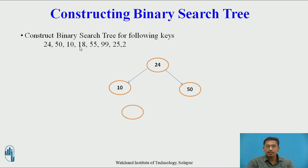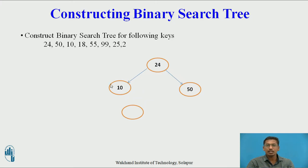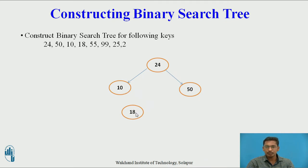Next node is 18. We traverse from root: 18 is less than 24, so it should be on the left hand side. 10 is already present there, so we compare 18 with 10. 18 is greater than 10, so 18 should be present on the right subtree of 10. This is the correct position of 18.